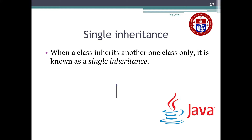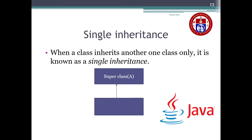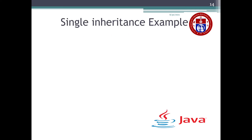Here is an example. I have a super class — the other name for super class is parent class. And one derived class — we may call it a child class or a subclass. The subclass name here is B. This is the example for single inheritance.